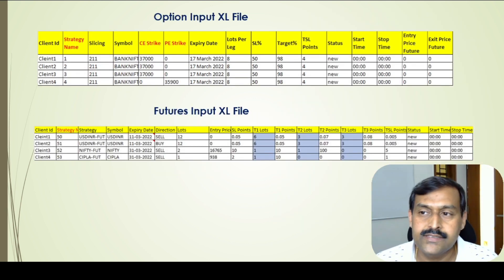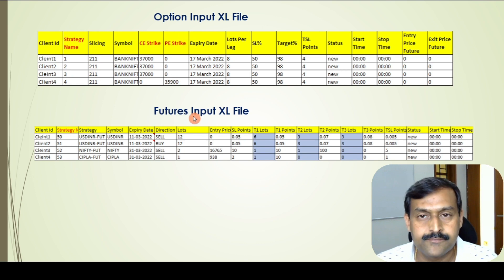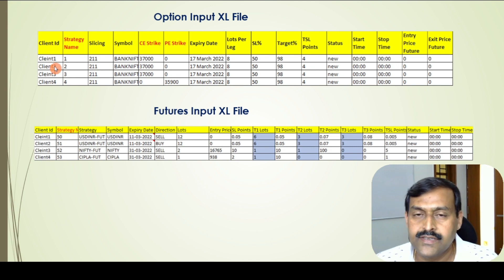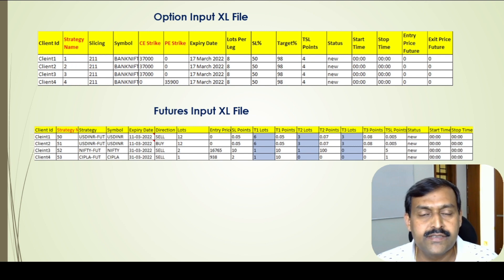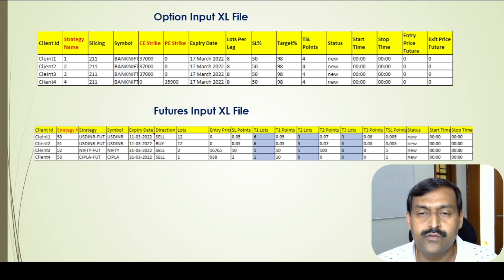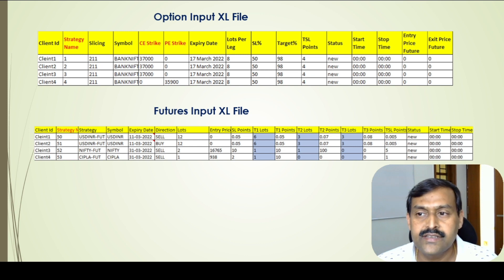Let us now move to the demo part. As mentioned, we use an Excel sheet for providing inputs to the algo system. There are two Excel sheets — one for options and one for futures. Each row in the Excel sheet corresponds to an instance of the strategy, and the columns correspond to inputs for that respective strategy. The client ID lets you select any client you wish to initiate the strategy for. The strategy name has to be unique across all strategies. Slicing lets you mention the type of order slicing you want. For the symbol, you can select Bank Nifty, Nifty, or USDINR. For CE and PE strikes, when you want a single-leg strategy you mention the other leg as zero, and when both are zero it becomes an ATM strategy that automatically picks the ATM strike.